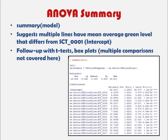The model we ran is a regression-type model, so we may also want to look at the regression output. Under our coefficients, the significance levels are comparisons to our intercept — in this case, our first line SCT0001. We can see that multiple lines appear to be significant compared with SCT0001, so we would probably want to follow up with t-tests, box plots, and multiple comparisons.